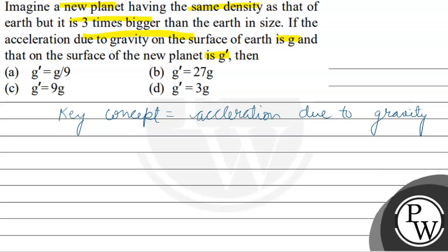So, first of all, we are given that this new planet's density is the same as the density of the Earth. And the radius of the new planet is three times bigger than the radius of the Earth, so R dash equals 3R.